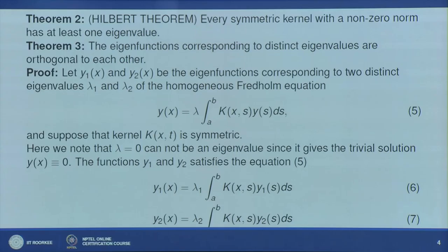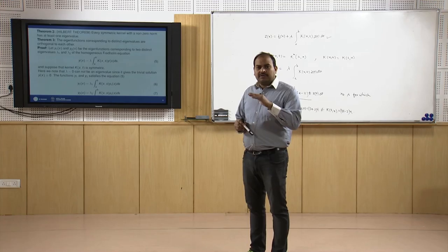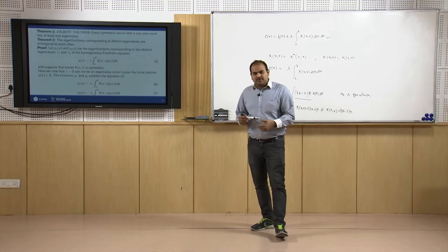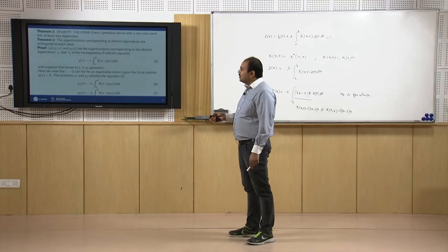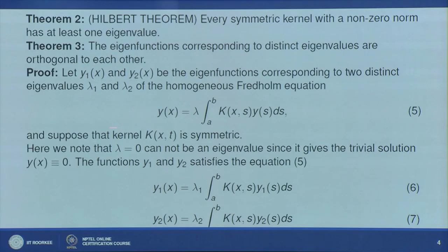We assume we have a problem with a symmetric kernel and more than one eigenvalue, so more than one eigenfunction. Corresponding to λ₁ we have y₁ and corresponding to λ₂ we have y₂ as eigenpairs. By definition of eigenpairs: y₁(x) = λ₁ ∫[a to b] k(x,s) y₁(s) ds and y₂(x) = λ₂ ∫[a to b] k(x,s) y₂(s) ds, using symmetric kernel k(x,s).